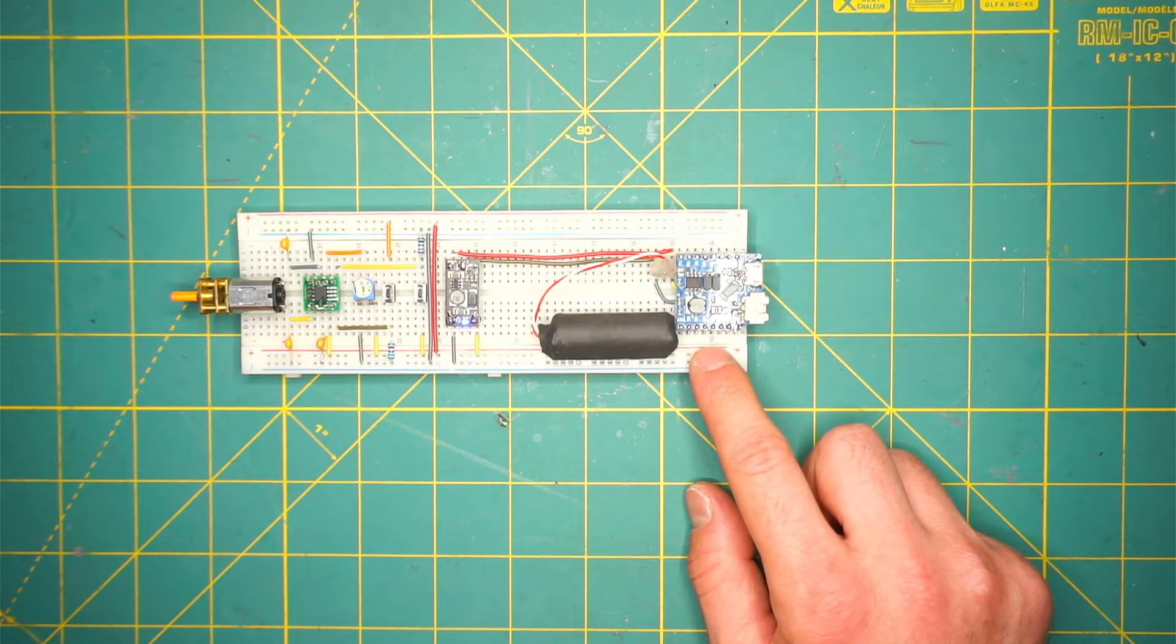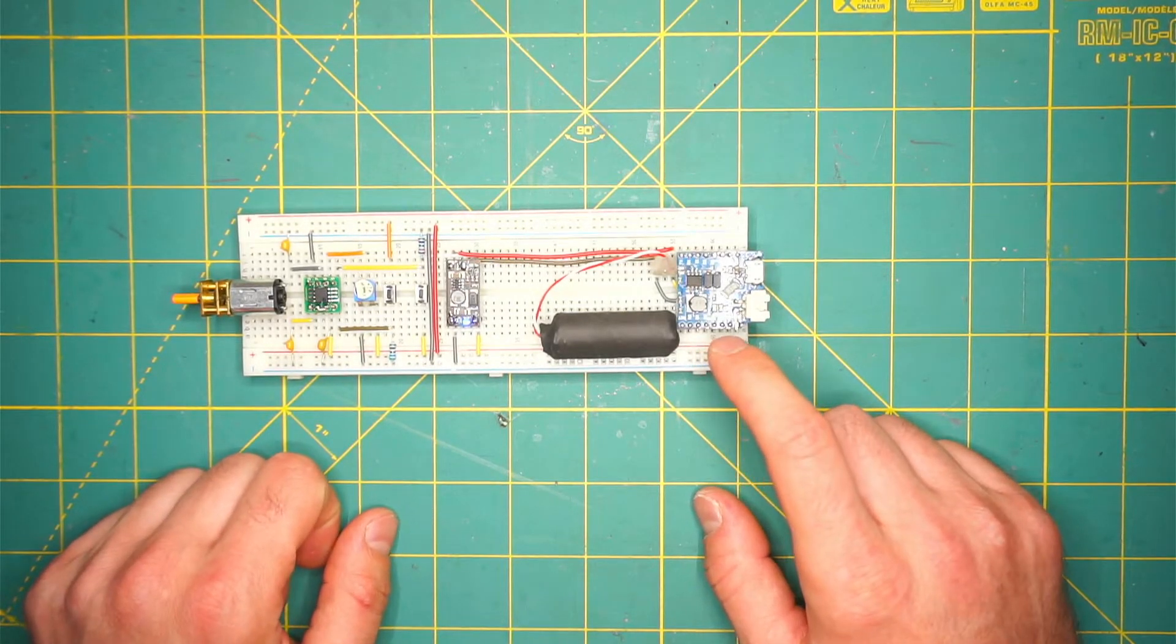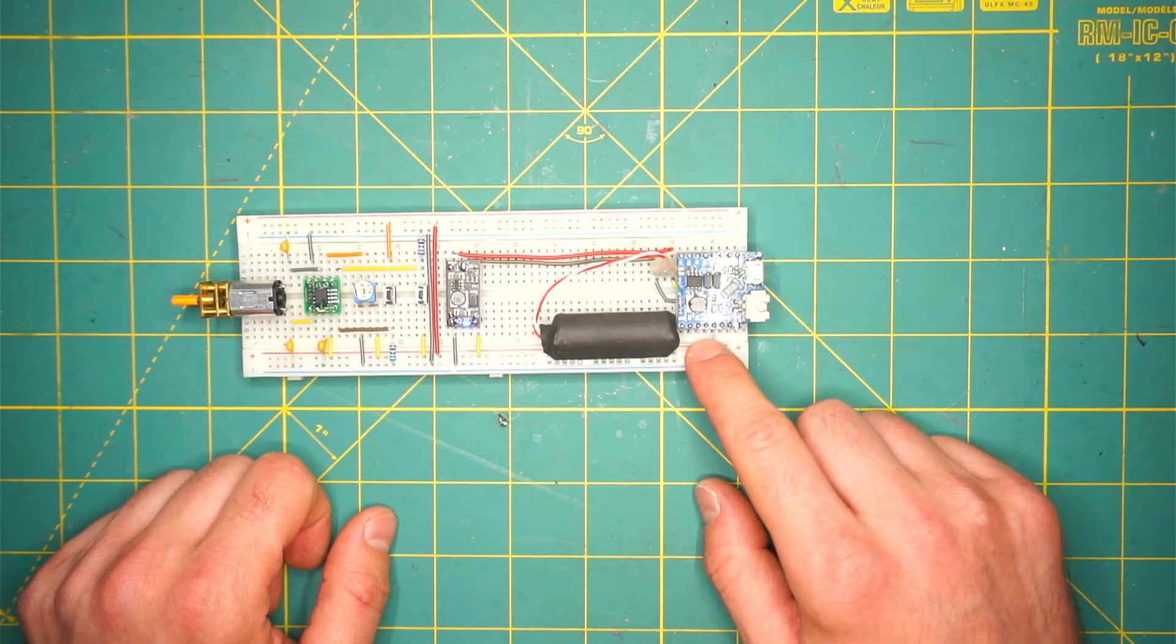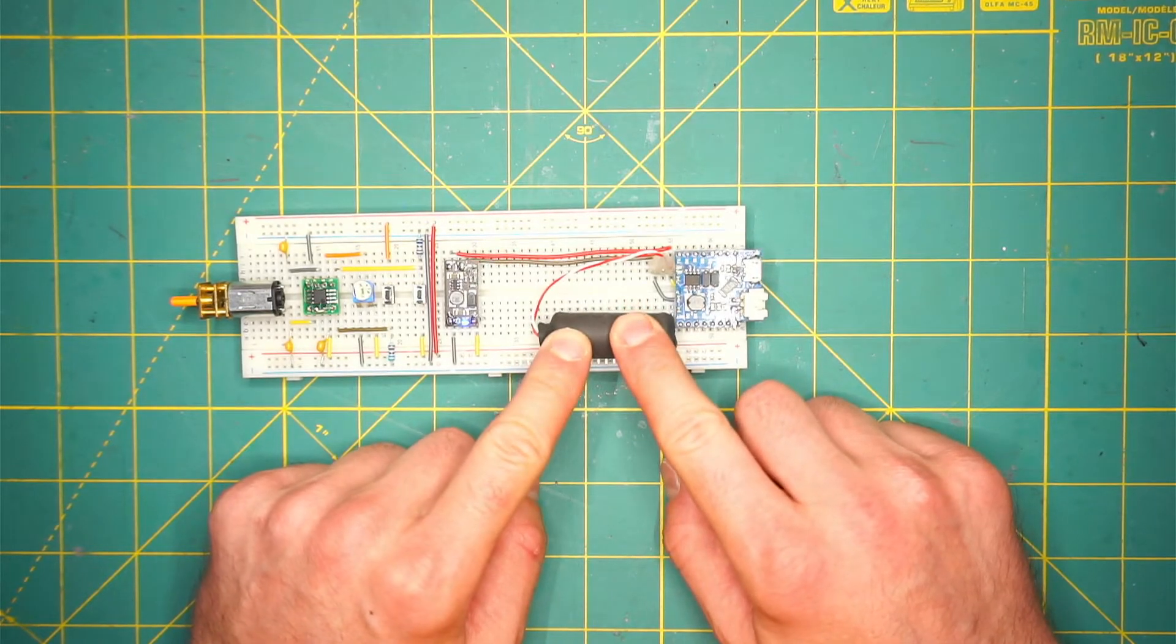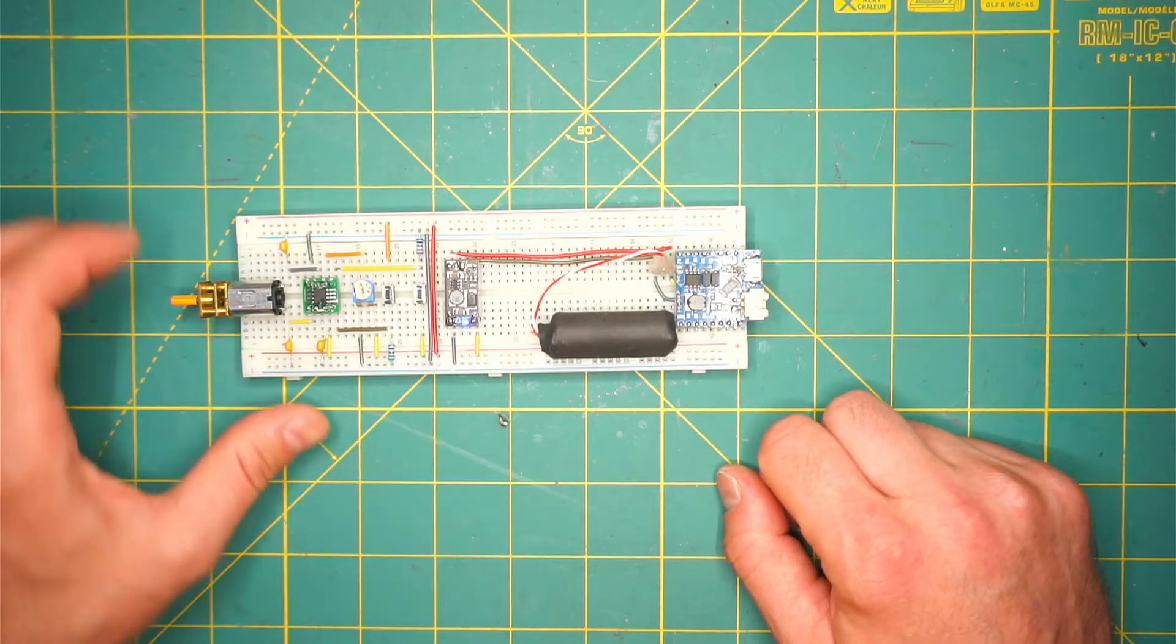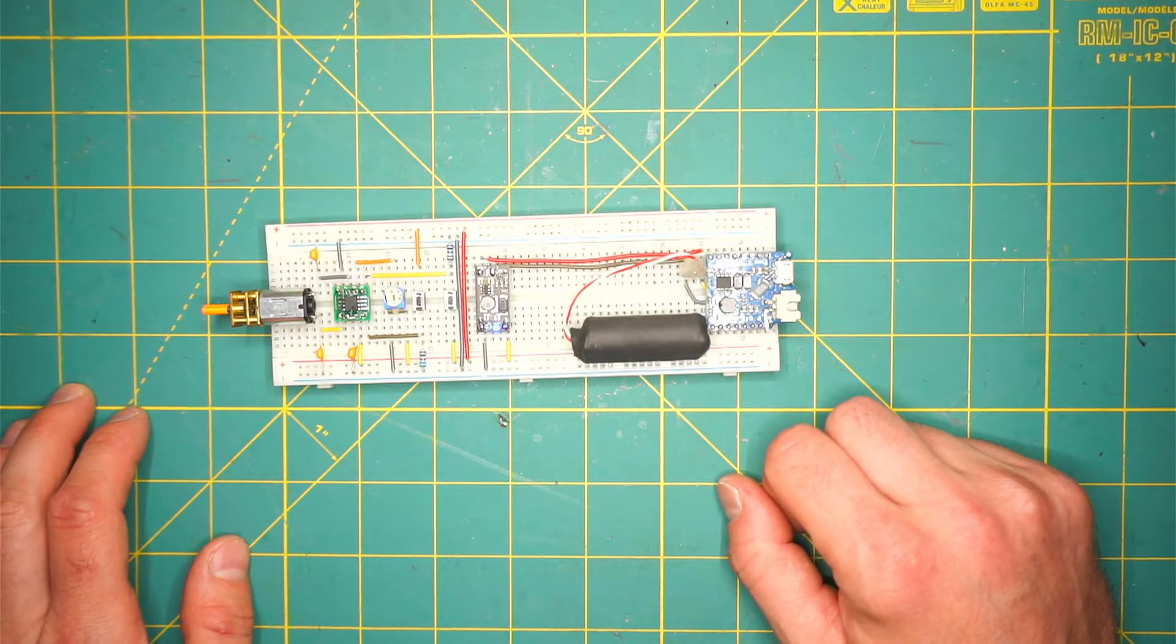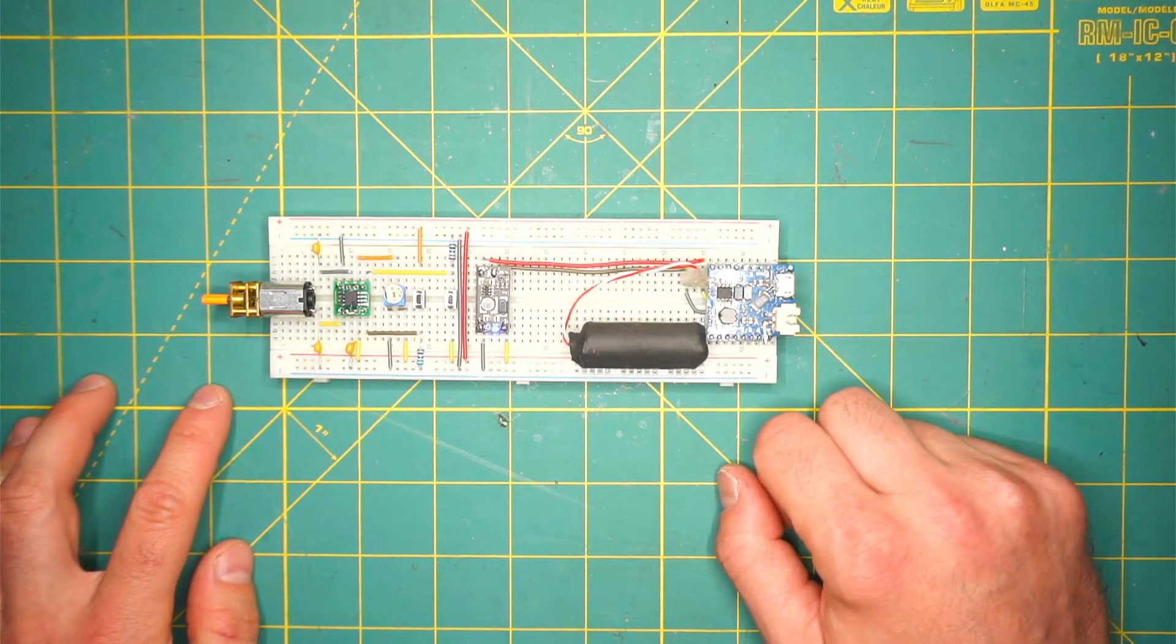The last thing I have here is a WEMOS D1 battery shield. It holds a charger that you can charge the battery with. It's a good design with two LEDs that give you feedback when the battery is ready to be used.